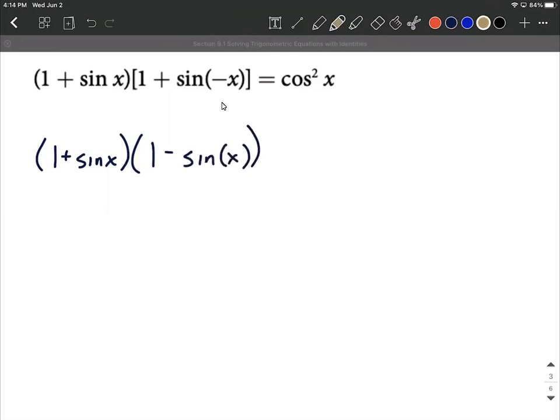We're allowed to get rid of negatives on the inside of trigonometric functions utilizing even odd identities.